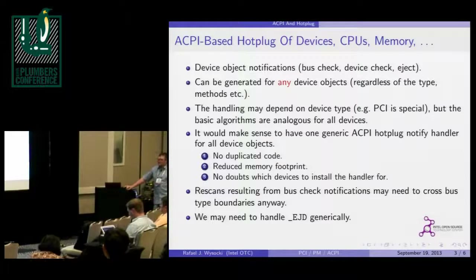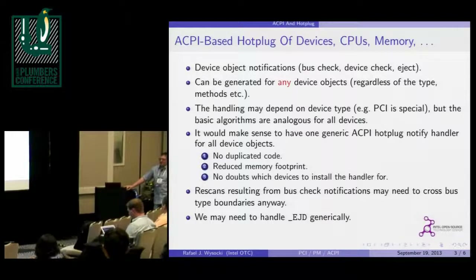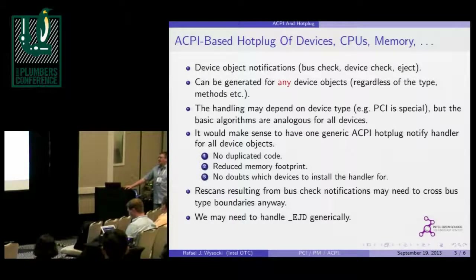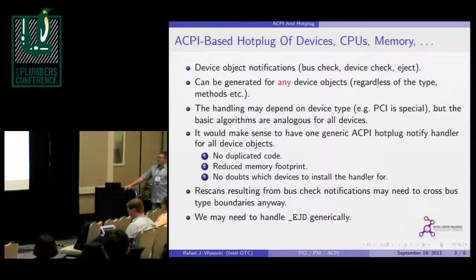The basic algorithms are very similar for each case. If there's a bus check, we just need to re-scan the bus — that always involves re-scanning the ACPI namespace and may also involve re-scanning the physical bus. If there's a device check, we should check if the device has gone or appeared. And eject is straightforward — eject is eject. It's very similar for everything: PCI, CPU, and so on.